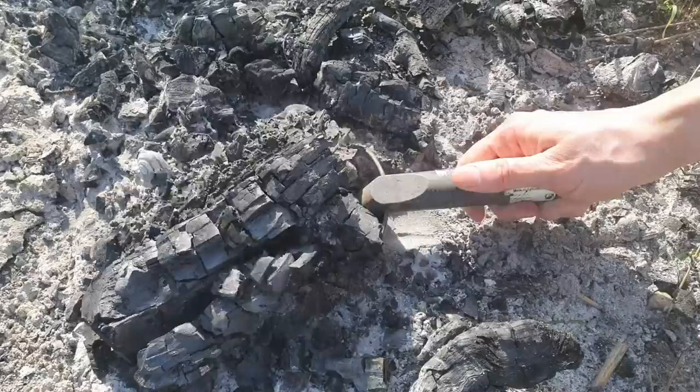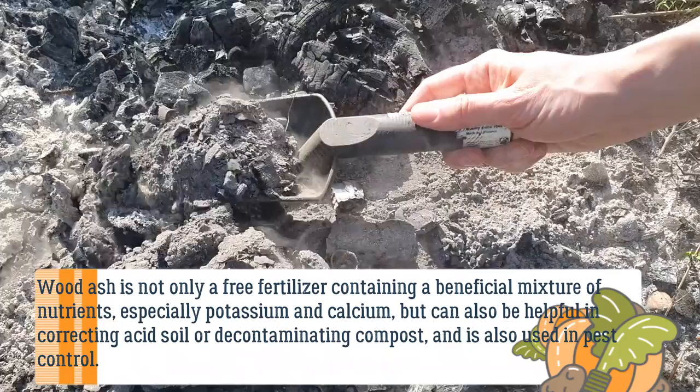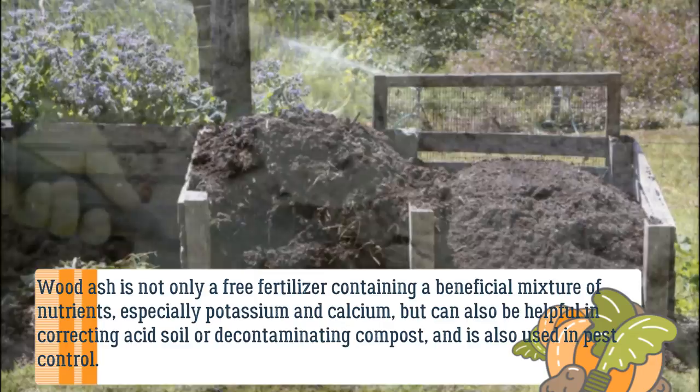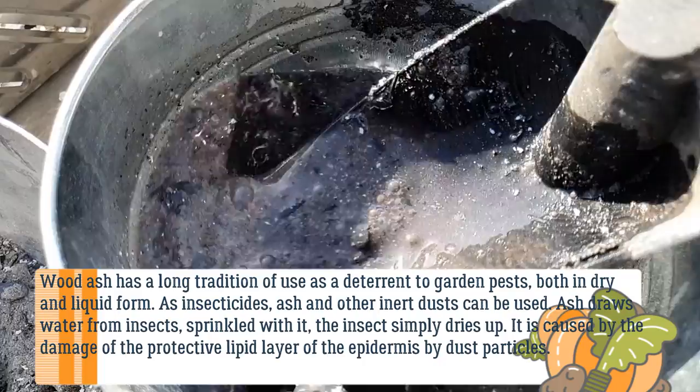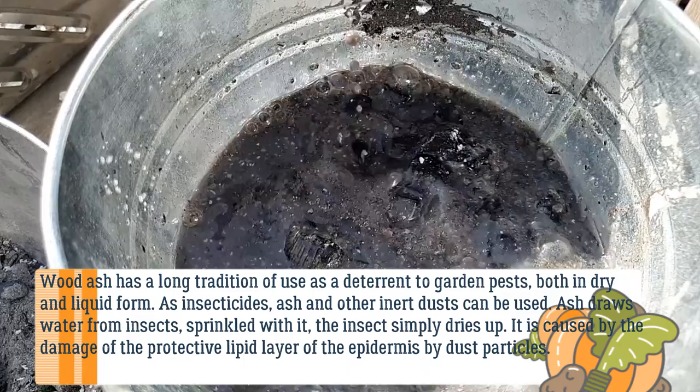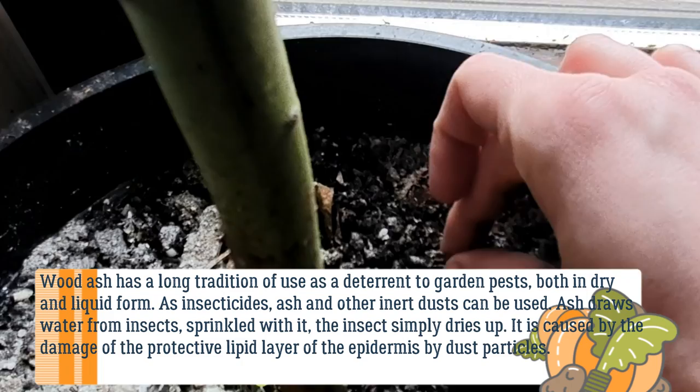Wood ash is not only a free fertilizer containing a beneficial mixture of nutrients, especially potassium and calcium, but can also be helpful in correcting acid soil or decontaminating compost, and is also used in pest control. As insecticides, ash and other inert dusts draw water from insects — sprinkled with it, the insects simply dry up. This is caused by damage to the protective lipid layer of the epidermis by dust particles.